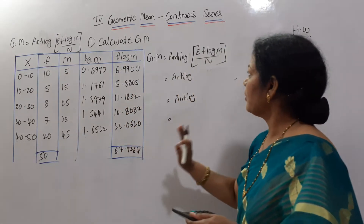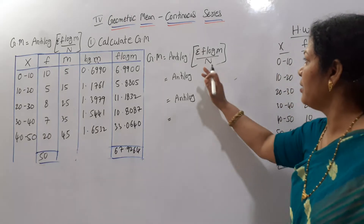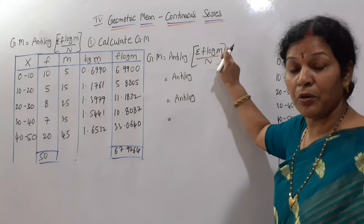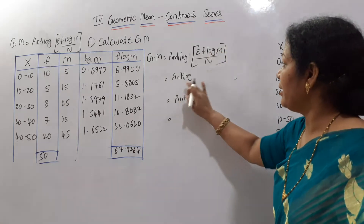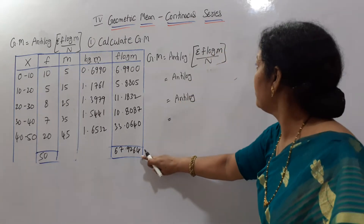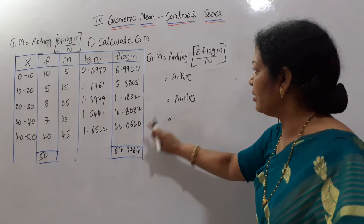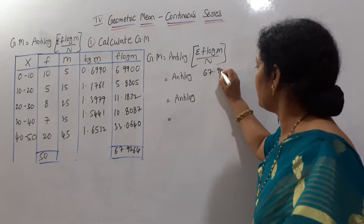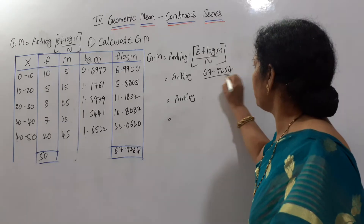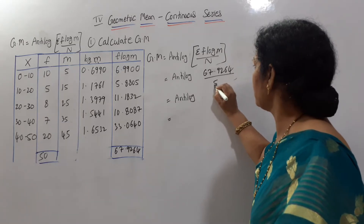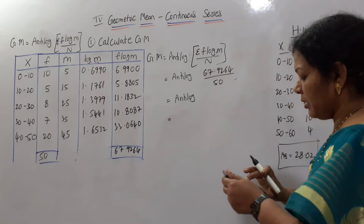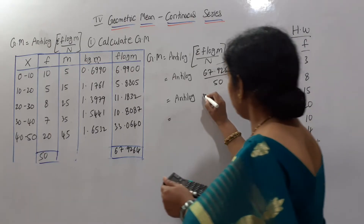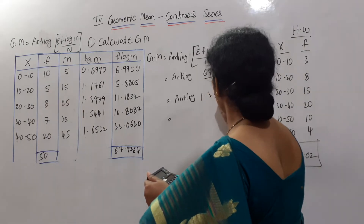Now apply it in the formula. The formula is anti-log of sigma f into log m by n. We have sigma f into log m = 67.9264, divided by N = 50. This gives us 1.3585.